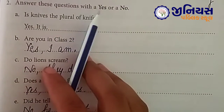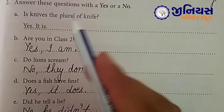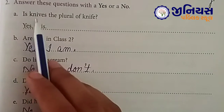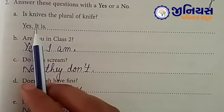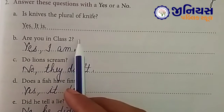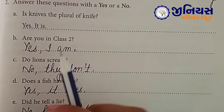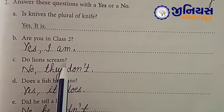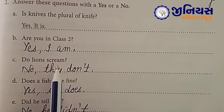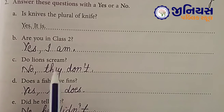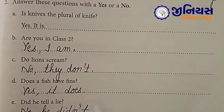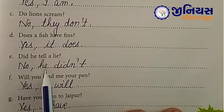Now answer these questions with a yes or a no. Is knives the plural of knife? Yes, it is. Are you in class 2? Yes, I am — aap no mein bhi de sakte ho. Do lions scream? No, they don't — lions roar karte hain. Does a fish have fins? Yes, it does. Did he tell a lie? No, he didn't.